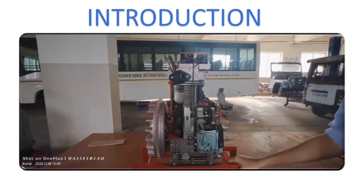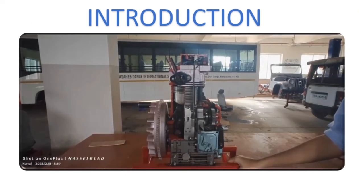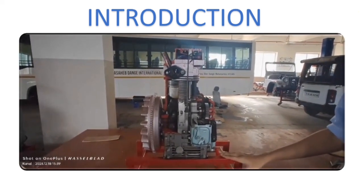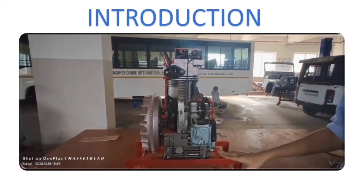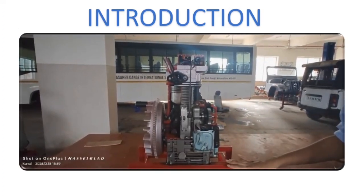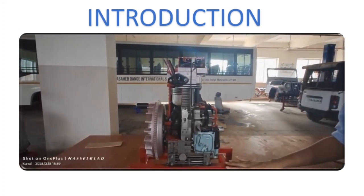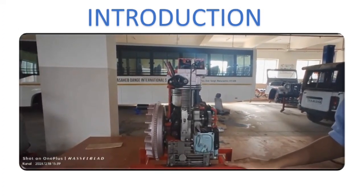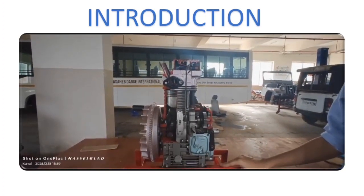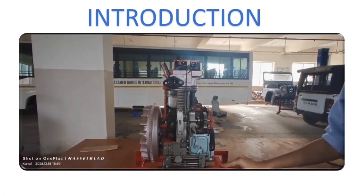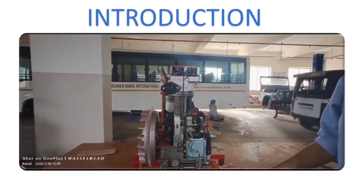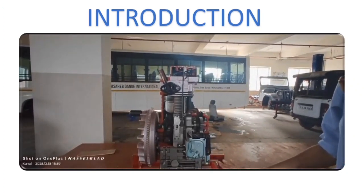A four-stroke engine is an internal combustion engine that utilizes four distinct piston strokes — intake, compression, power, and exhaust — to complete one operating cycle. A complete operation in a four-stroke engine requires two revolutions, that is 720 degrees, of the crankshaft.